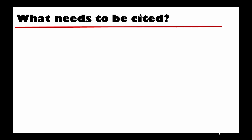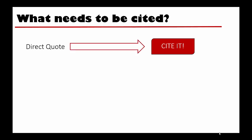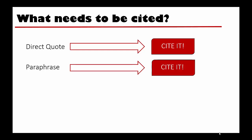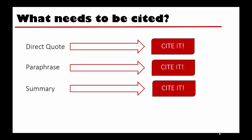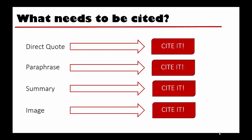What needs to be cited? If you take a quote directly from one of your sources, you need to cite it. If you paraphrase or change the wording of a certain idea from one of your sources, you need to cite it. If you summarize an entire article or book, you need to cite it. If you use an image that you did not create, you need to cite it. Just to be safe, when in doubt, cite it.